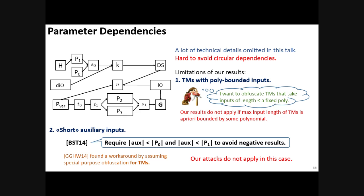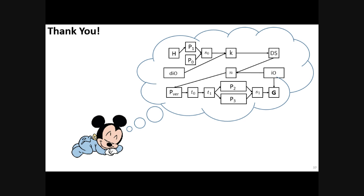And second, Bellare et al. proposed to require that the auxiliary information that is returned by the generator, its size should be smaller than the size of each of the programs. So again, our result does not apply to this case, and this is in contrast to GGHW, who managed to find a workaround for this by assuming a slightly stronger version of special purpose obfuscation.